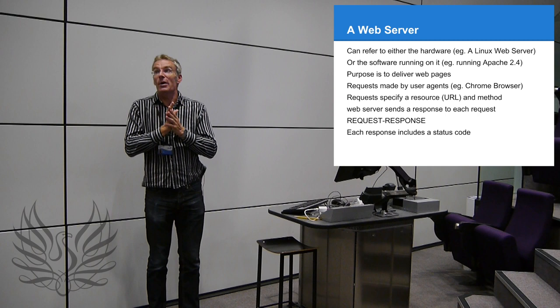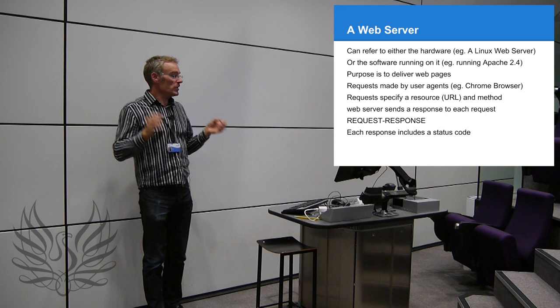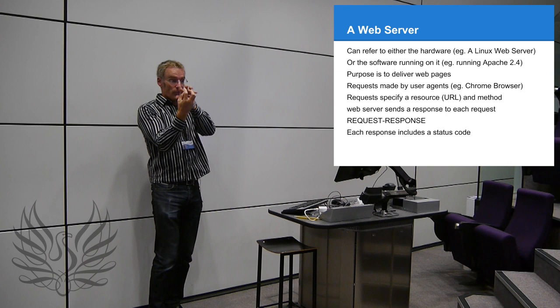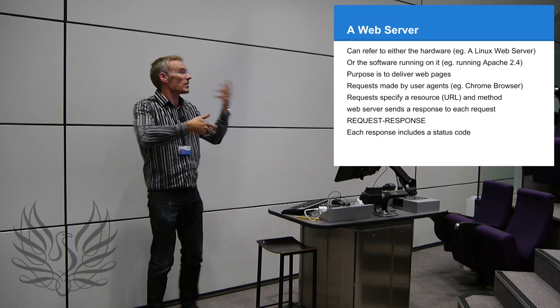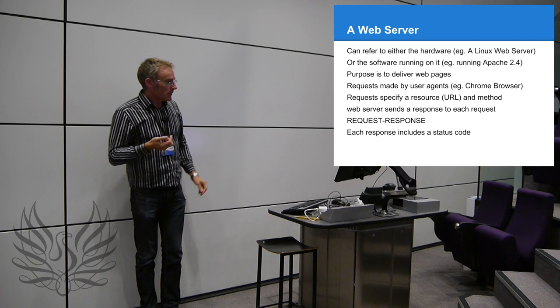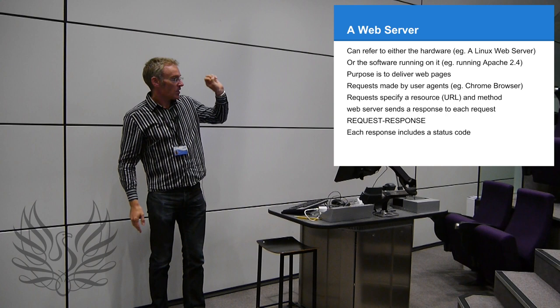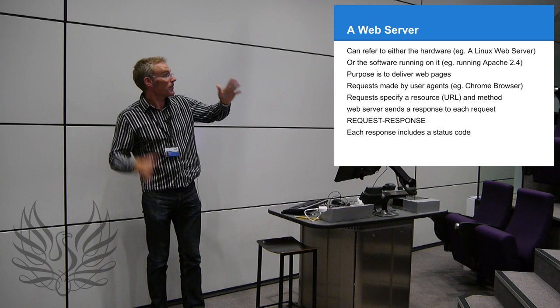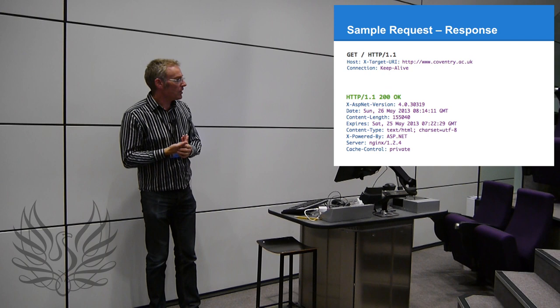Apache is the most common web server — about three quarters of web servers run Apache on Linux. All it does is listen for requests; when it gets one, it creates a little process to handle the request, then that process dies. They're called daemons, generated as requests come in. A good powerful web server can handle millions of requests — it's a very powerful piece of software. The request is made by the user agent specifying the URL and method, and the web server sends a response back.